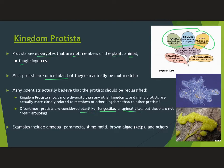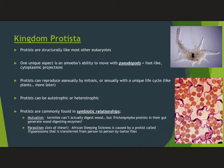Some examples of protists you may have heard of: amoeba, paramecia, slime mold — which grows on trees — and brown algae or kelp in the ocean, which is actually a type of protist, not a plant. Protists are a lot like other eukaryotes — they have nuclei and all the organelles.